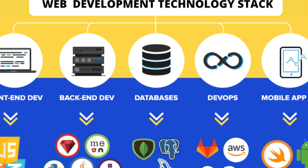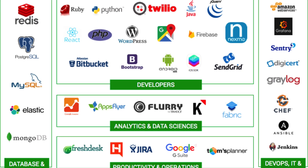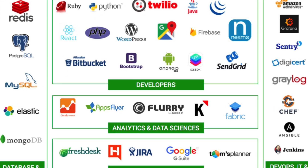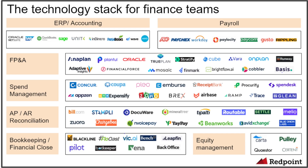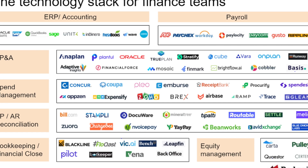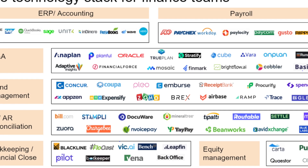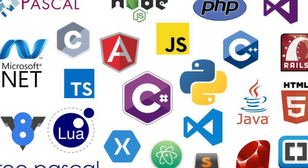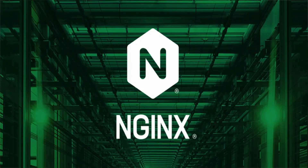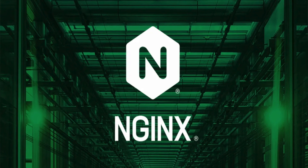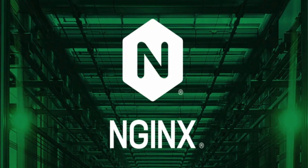For a fintech, your tech stack will need to include cloud storage services like Google Cloud or AWS, DevOps solutions like Docker, GitHub, or Visual Studio, frameworks like PowerShell, Node.js, or Backbone.js, and programming languages like Python, JavaScript, Java, PHP, or Kotlin. You could also add extras like Nginx or Braintree.